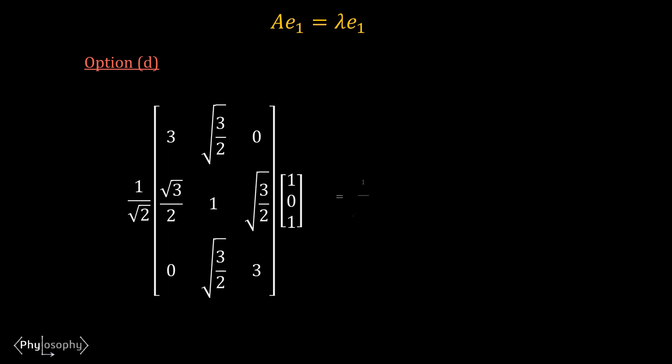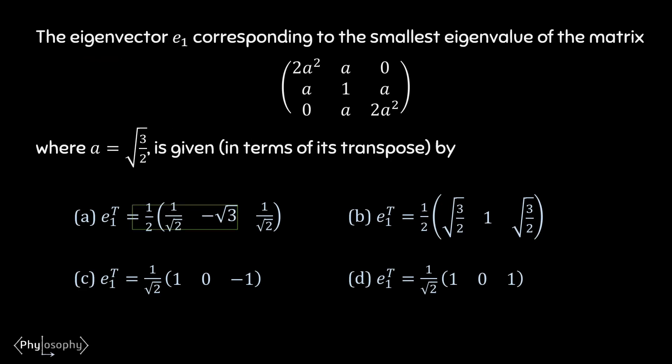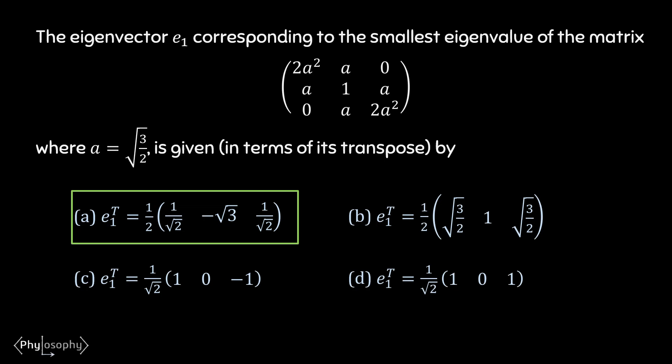For option D, if you multiply the vector with matrix A, you will find that it is not an eigenvector of matrix A, as it doesn't satisfy the equation A·e1 = λ·e1. Therefore, the vector given in option A is the eigenvector of the given matrix corresponding to the smallest eigenvalue, which is λ = 0. For more solved problems on matrices and determinants, please see the playlist — the link is in the description below.